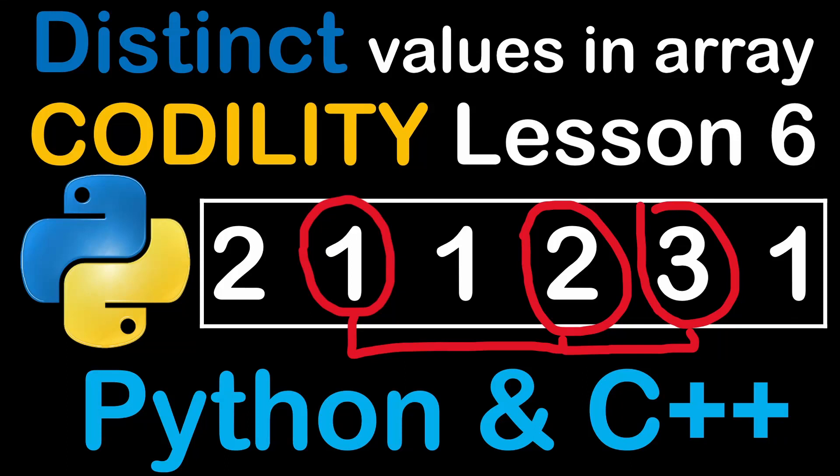Hi everyone and welcome again. Today we're going to start solving questions of lesson number six of Codility Exercises, and we're starting with counting the distinct values in an array.